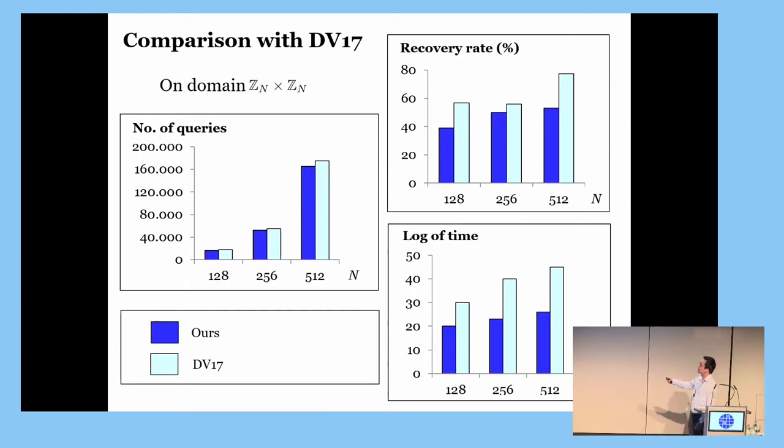So, there is a more detailed comparison between our attack and DV. As I mentioned earlier, for the timing, we are much better. The two attacks essentially have the same asymptotic data complexity. But DV opts for a more aggressive choice of parameters to improve the recovery rate. So, concretely, for data complexity, our attack is slightly better.